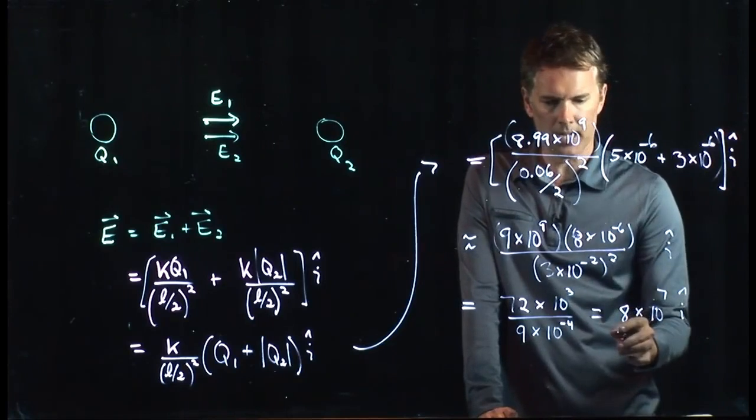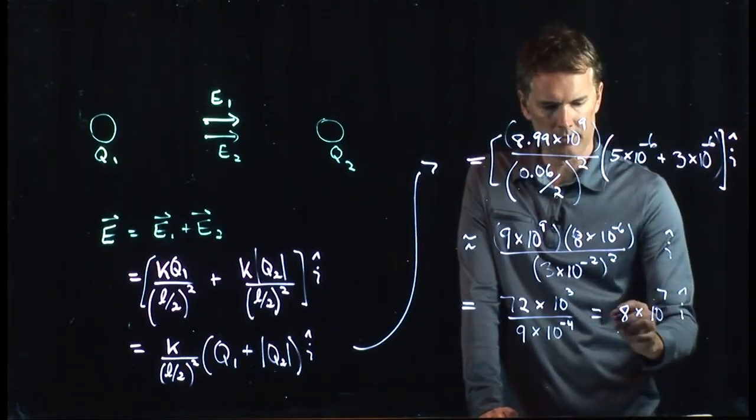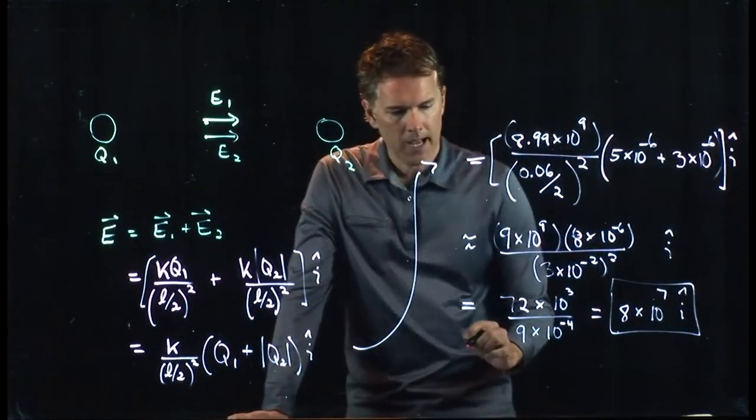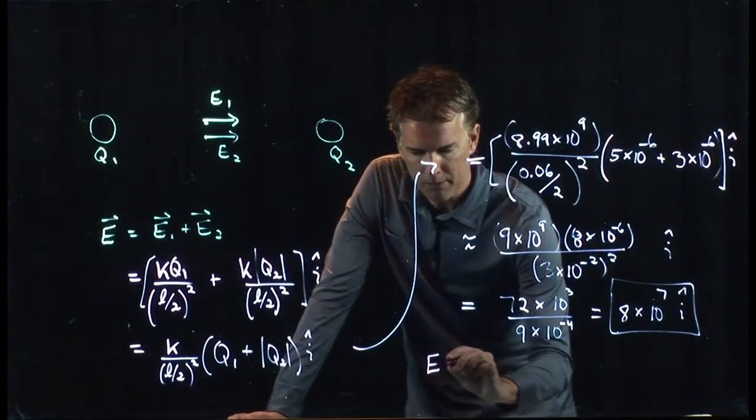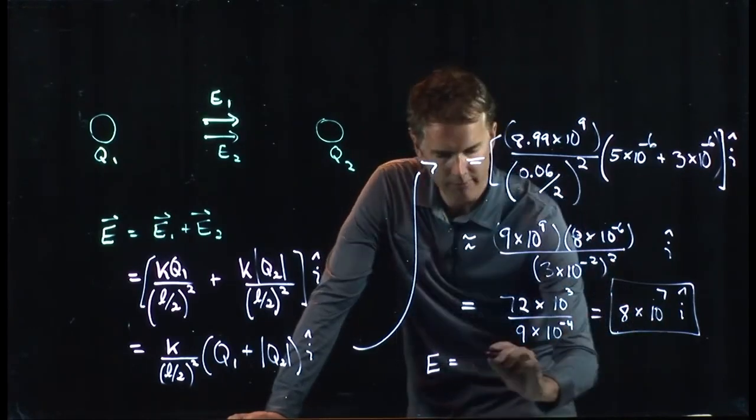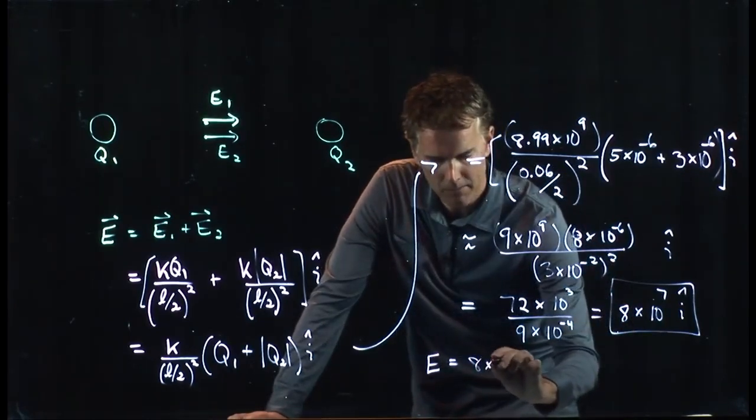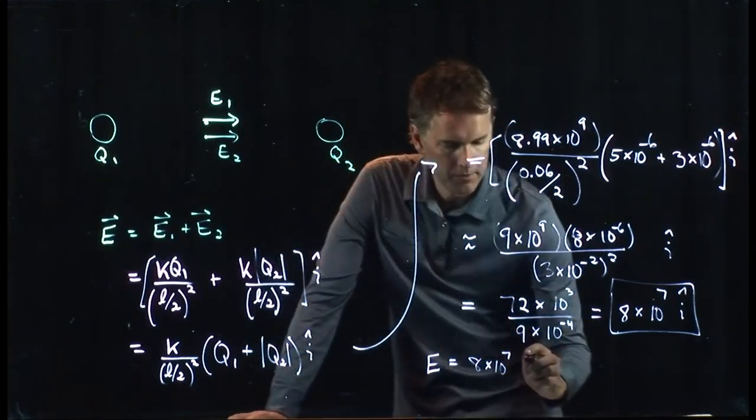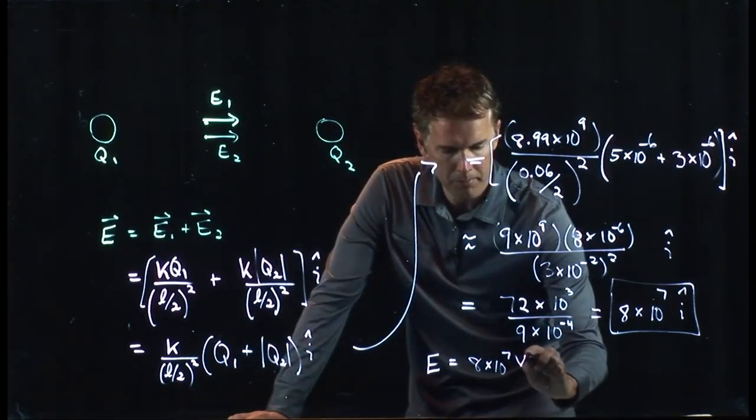So that's my guess. What did you guys get? That's the answer? Okay, good. 8 times 10 to the 7. And so the strength of the electric field is the number out in front, 8 times 10 to the 7. And the SI units are volts per meter.